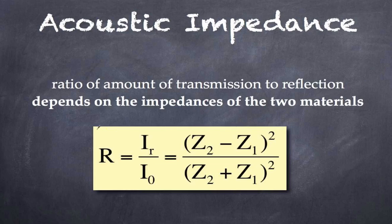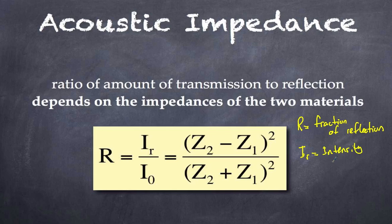This R value is the fraction of reflection. The I subscript R refers to the intensity of the reflection, and I naught refers to the total intensity you had to begin with. The Z values refer to acoustic impedance. You can simply quote the value in tables without inserting times 10 to the 6th when doing ratios.